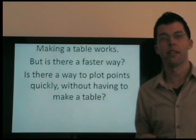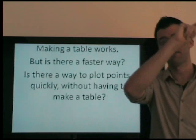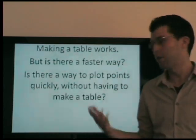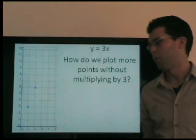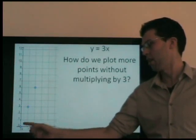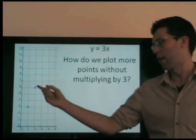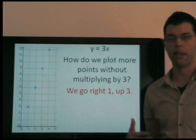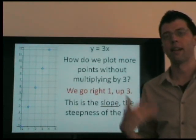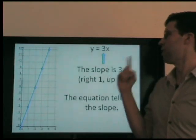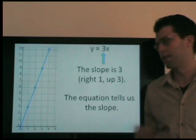That works, but is there a faster way to plot points without having to do these calculations or make a table? Let's look for a pattern. We notice that as we go from point to point, we go right 1 and up 3 — right 1, up 3. That's the slope, the steepness of the line. How do we know that ahead of time? The equation tells us — this number right here tells us the slope of the line, in this case, 3.